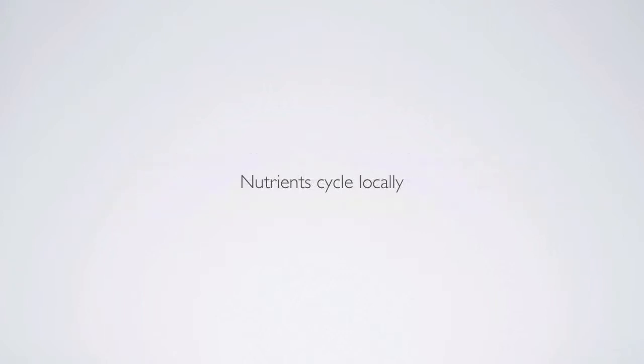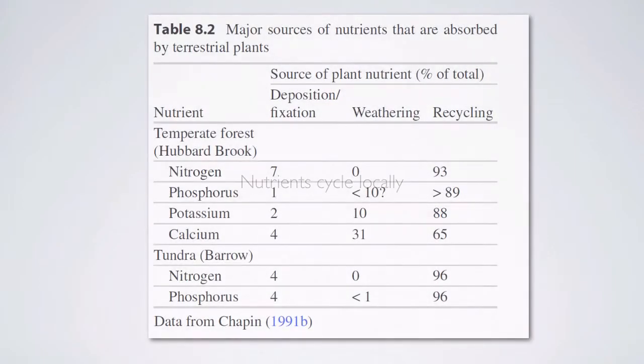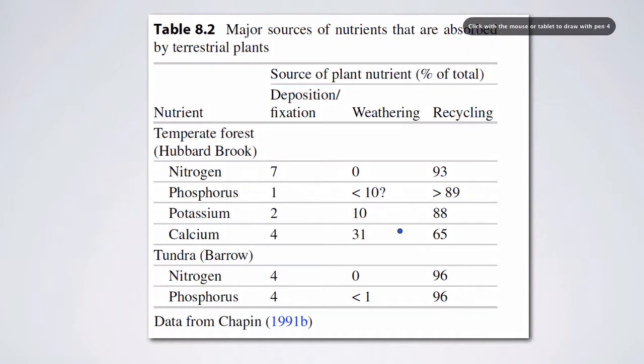Now nutrients cycle locally, and we can see that by taking a look at the source of plant nutrients. So if you have your box, for example, that represents your ecosystem, there could be inputs of nutrients from outside the ecosystem, recycling of nutrients within that ecosystem.